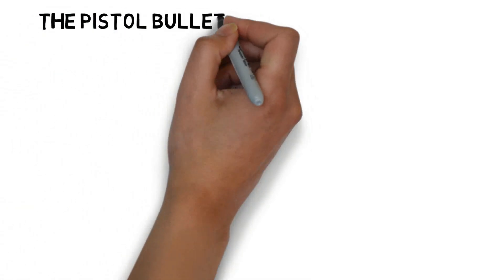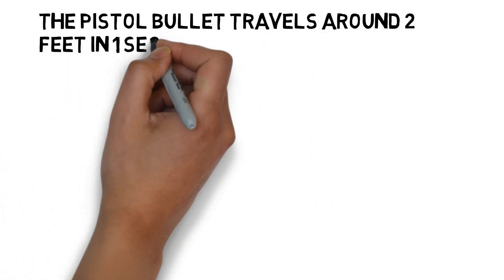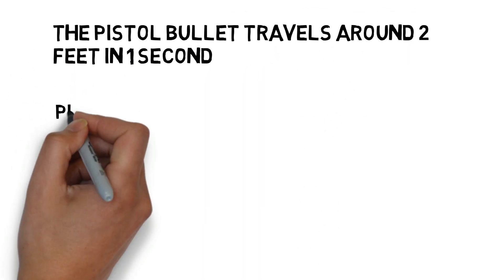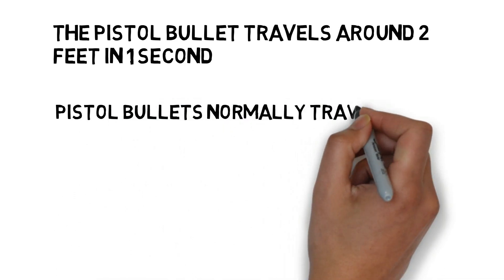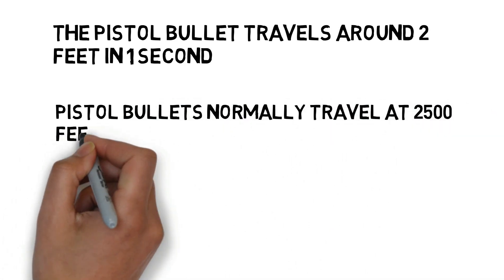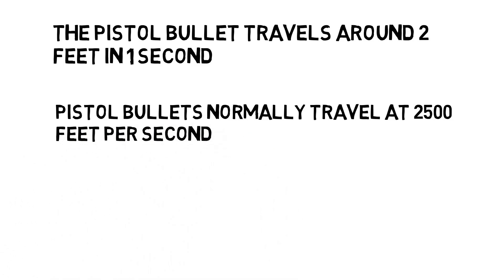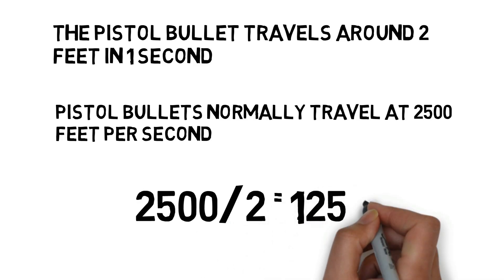This is the clip closest to the Reverse Flash scene showing Barry's perception of time. So in the scene, the pistol bullet travels around 2 feet in 1 second. The bullets normally travel at 2,500 feet per second. So we simply divide 2,500 by 2 and we see that Barry sees things 1,250 times slower.